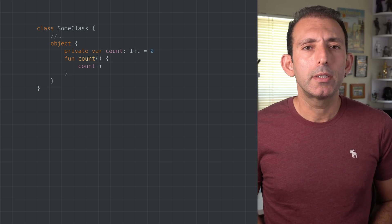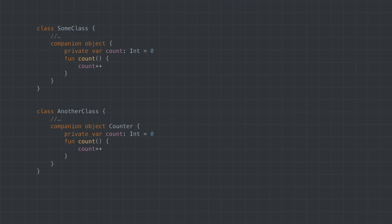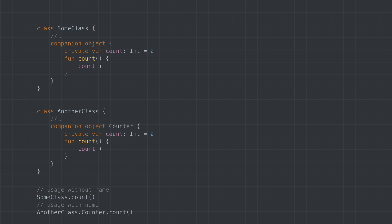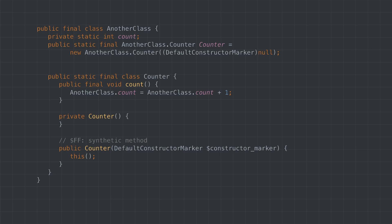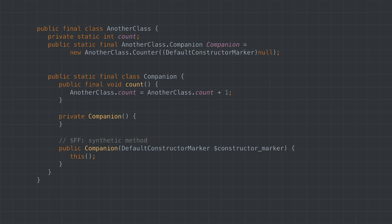Companion object is similar to object. Companion objects are always declared in a class, and their properties can be accessed by using the host object. The companion object doesn't require a name. If the companion object has a name, the caller can access the members using the companion object's name. Any caller can access the count method on some class just like it's a static member of that class. Alternatively, any caller can access the count method by using the counter name, just like a static member of another class. The companion object decompiles into an inner class with a private constructor. The host class initializes the inner class through a synthetic constructor which only it can access, and keeps a public reference to the companion object accessible from other classes. If the companion object is declared without a name, the Kotlin compiler uses 'Companion' as the name of the static class.